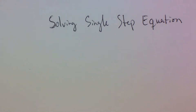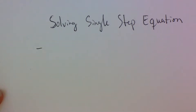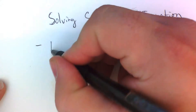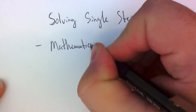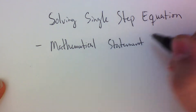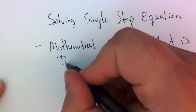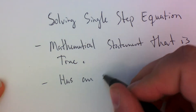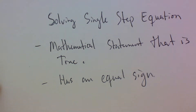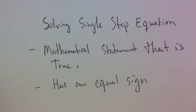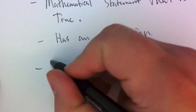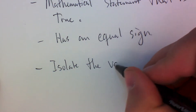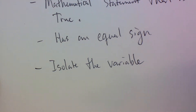The big thing you want to remember is that an equation is a mathematical statement that is true and it has an equal sign. While you're solving equations, remember that the equation is a mathematical statement that is true, has an equal sign, and the big idea is that we are trying to isolate the variable so that we can make that statement true.